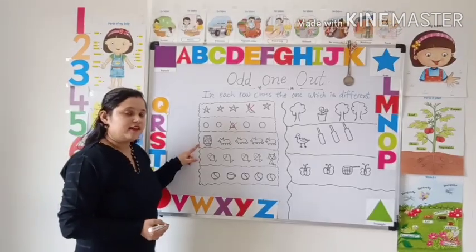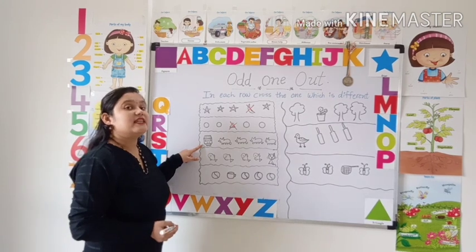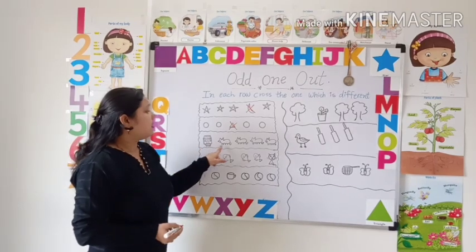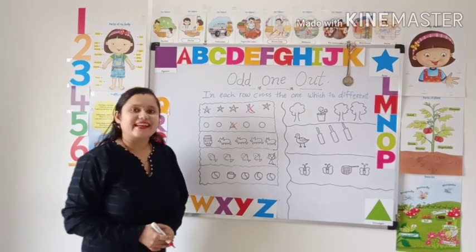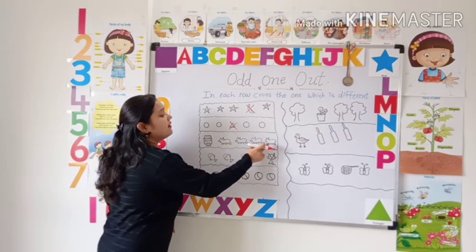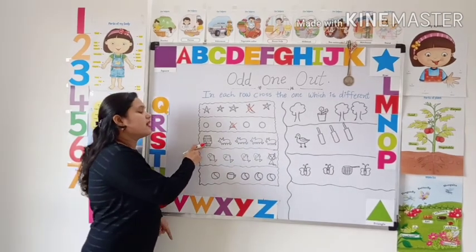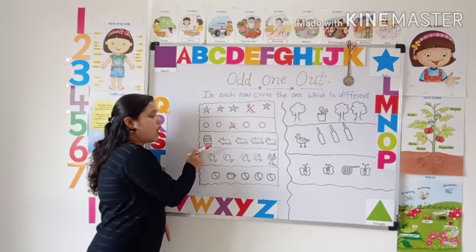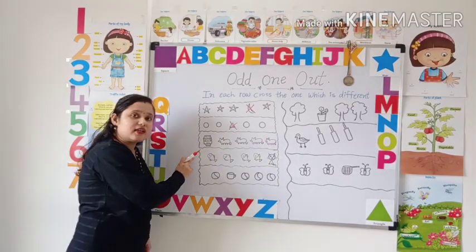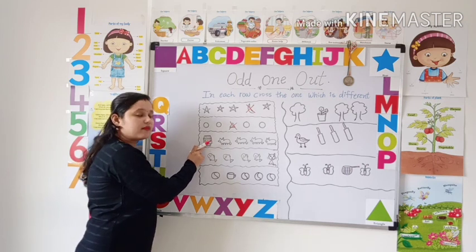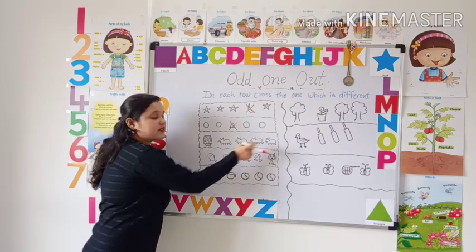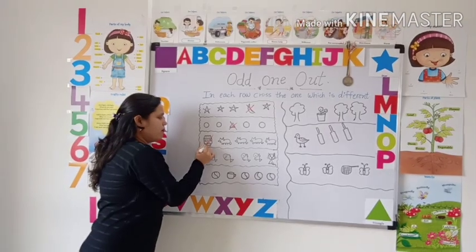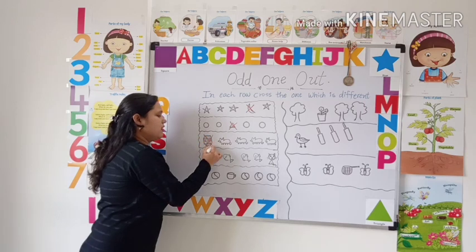Now look here. What is this? Yes, this is a house. And these are rats. Very good. These are rats, and this is a house. So it is odd one from others. It is the odd one. So put the cross on the odd one.